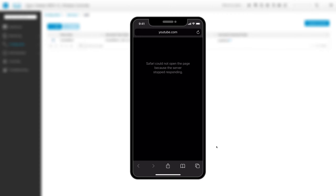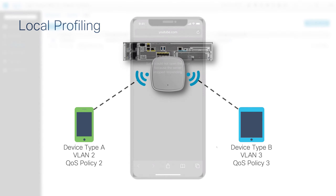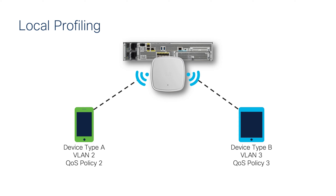So now let's enable local profiling for device classification on our WLC. Local profiling allows the device type of wireless clients that join the network to be noted. Using this device type, network admins can create local profiling policies which can apply different access policies for device types. For example, one device type can be put into VLAN 2 with QoS Policy 2, while another can be put into VLAN 3 with QoS Policy 3. To classify devices locally, the 9800 uses the OUI portion of the device MAC address as well as HTTP and DHCP profiling. For more information, please see the link in the description below.